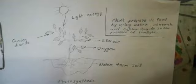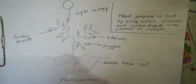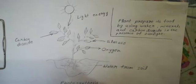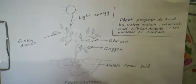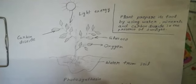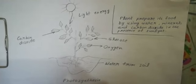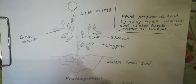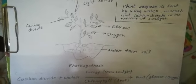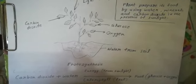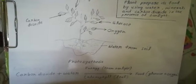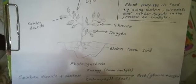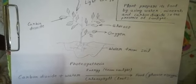How do green plants prepare their own food? We will understand through this picture. Water and minerals are absorbed from the soil, carbon dioxide from air, and light energy from the sun. The plant makes its food in the form of glucose and releases oxygen. This process is known as photosynthesis. Plants prepare their food by using water, minerals, and carbon dioxide in the presence of sunlight, producing glucose and releasing oxygen. We can understand it through this equation also.